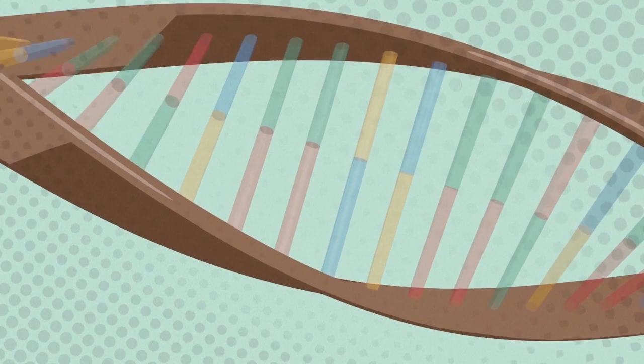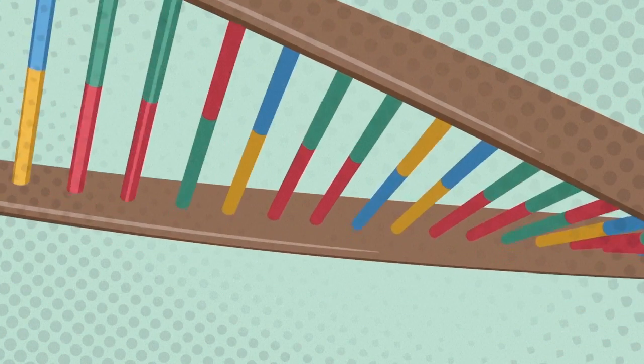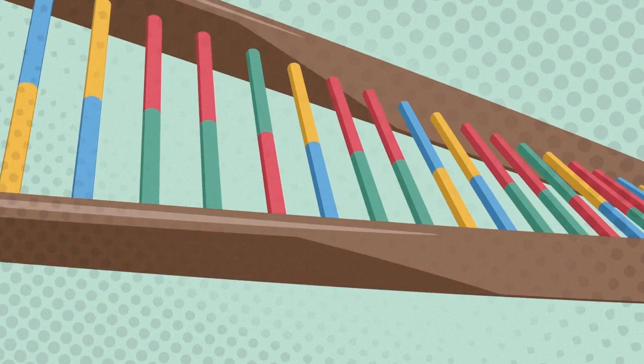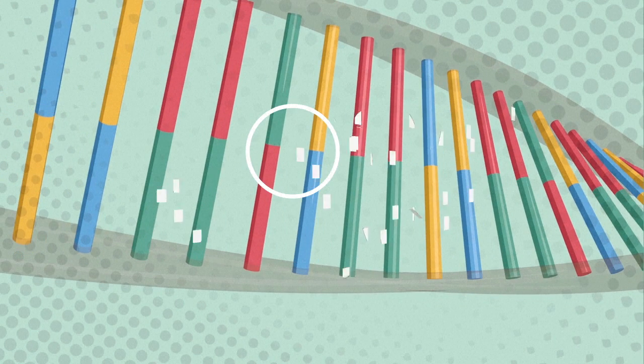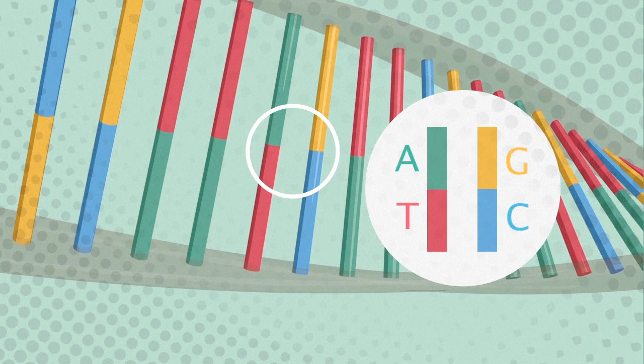DNA comprises intertwined strands made up of sugar and phosphate with links across the middle. The rungs are base pairs made of four different chemicals represented by the letters A, T, G and C. The letters always come in pairs, A with T and G with C.